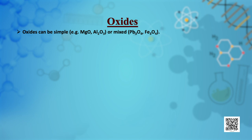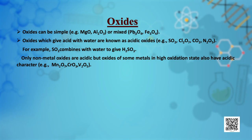Simple oxides can be classified on the basis of their acidic, basic or amphoteric character. Oxides which give an acid with water are known as acidic oxides — for example, sulphur dioxide and carbon dioxide. Sulphur dioxide combines with water to give sulphurous acid. Generally, only non-metal oxides are acidic, but oxides of some metals in high oxidation states also have acidic character, for example oxides of manganese and chromium.